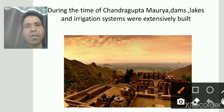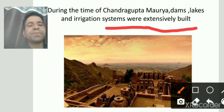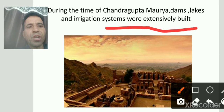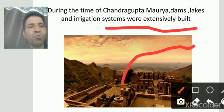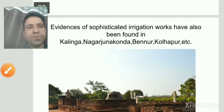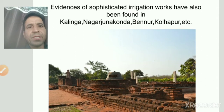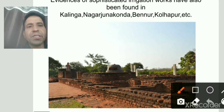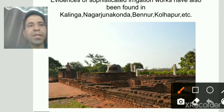यहां water harvesting system हम देख रहे हैं। Students, you can see here an irrigation system, extremely well built, काफी अच्छी conditions में यह बना गया है। यह Chandragupta Maurya के time का है। One more evidence - an example of irrigation work also found in Kalinga.